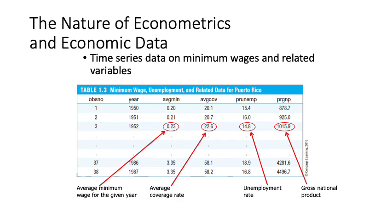Here we have an example of time series data on minimum wages and related variables. There are 38 observations representing 38 years in this sample, starting in 1950 and ending in 1987. Column three represents average minimum wages for the given year.